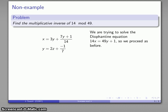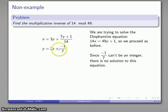And here I run into a problem. I need y to be an integer, but this remaining fraction here can never be an integer value. So y can't be an integer unless z is not an integer, and we can't allow that. So because negative 1/7 can never be an integer, there is no solution to this Diophantine equation, and 14 does not have a multiplicative inverse mod 49.